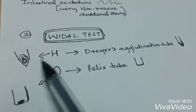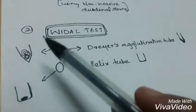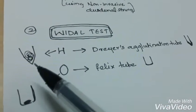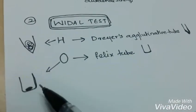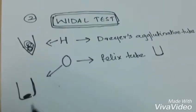On agglutination in Dreyer's agglutination tube, that is with H agglutinin, we get loose, cotton, woolly clumps. And in O, that is Felix tube, we get disc-like pattern at the bottom.